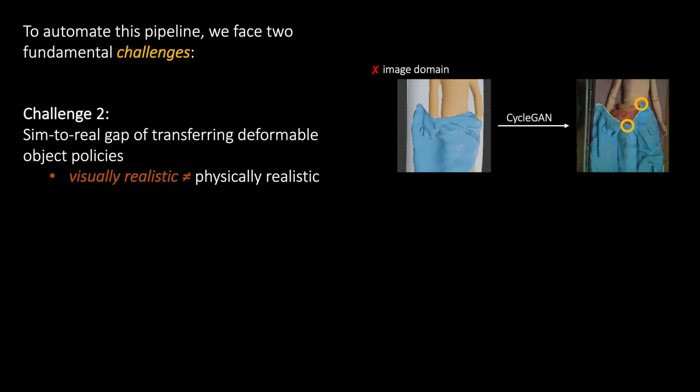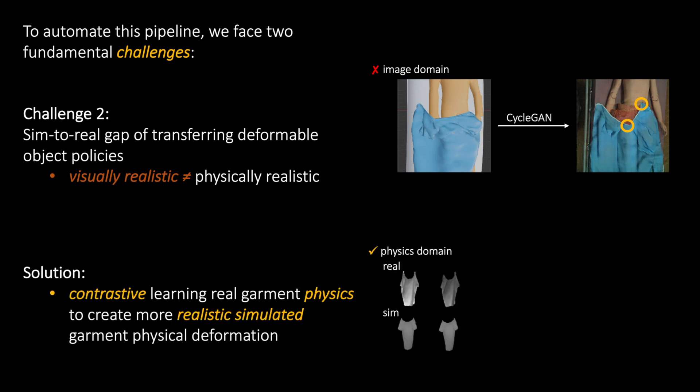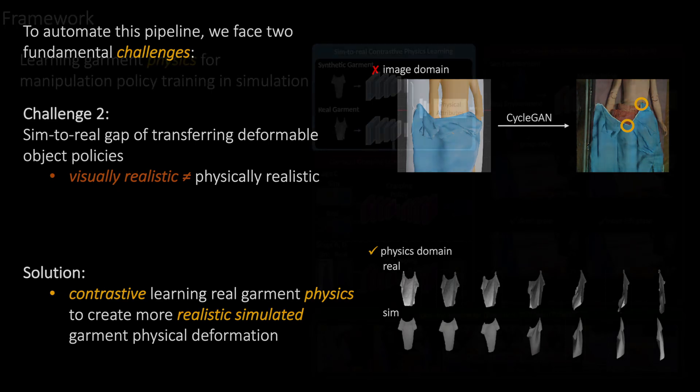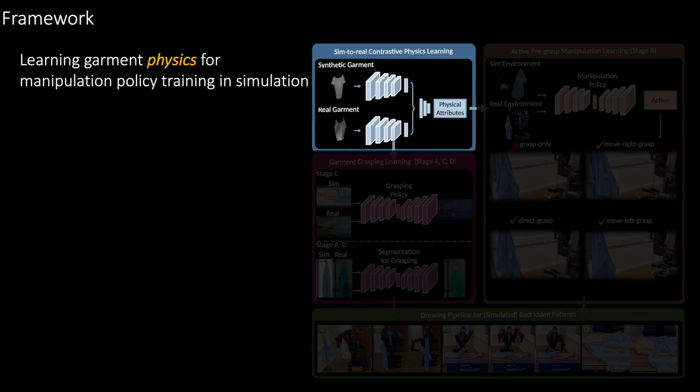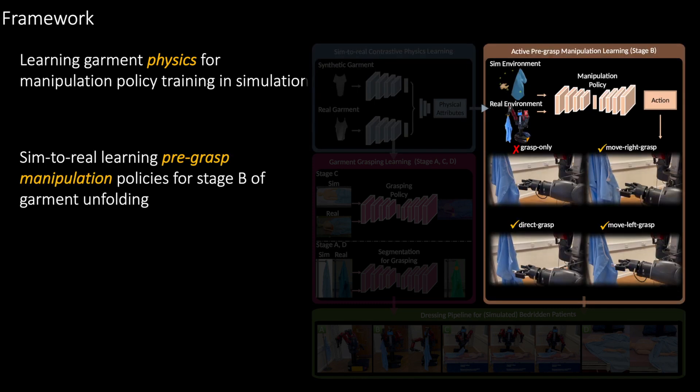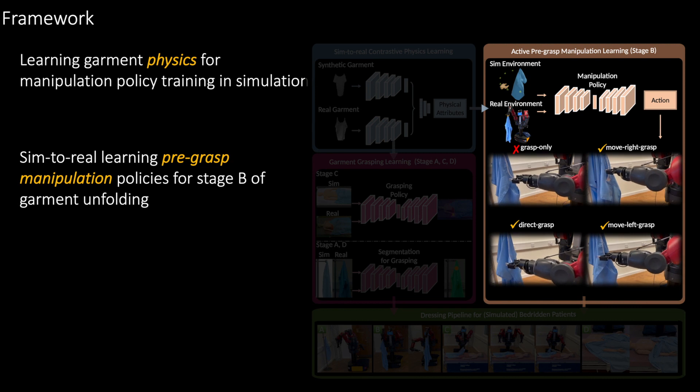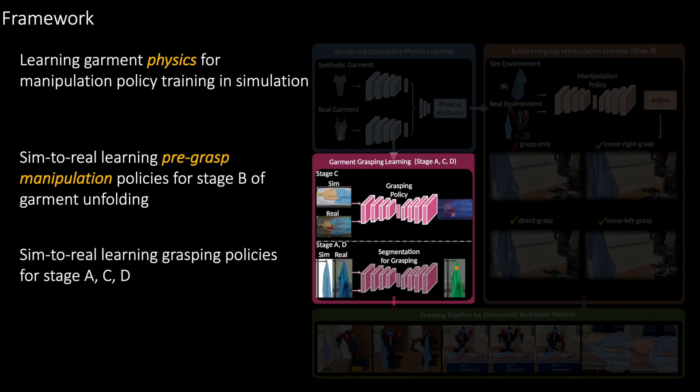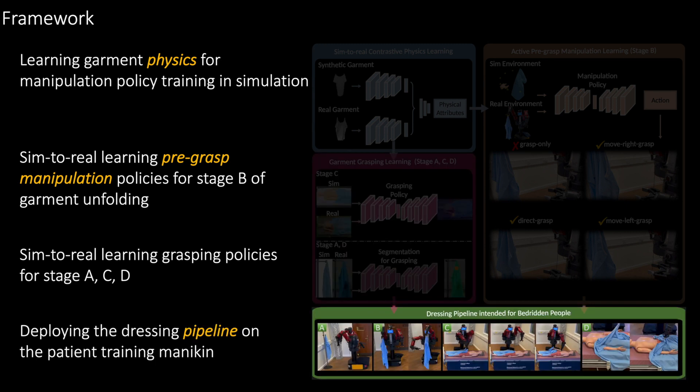The second challenge is transferring the deformable object manipulation policies learned in simulation to the real world. We bridge the sim-to-real gap of the deformable object policy transfer by approximating the simulator to real-world garment physics. Then, for each stage of the pipeline, simulation with learned garment physics is leveraged to either learn the proposed pre-grasp manipulation policy directly in simulation before transferring to the real system in stage B, or generate cost-effective label data for grasping policy training in stages A, C, and D.